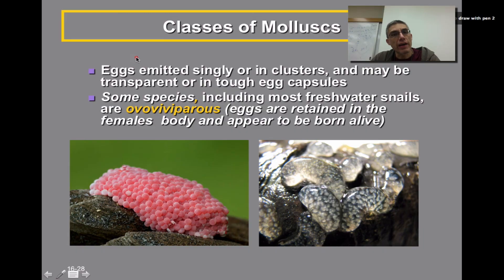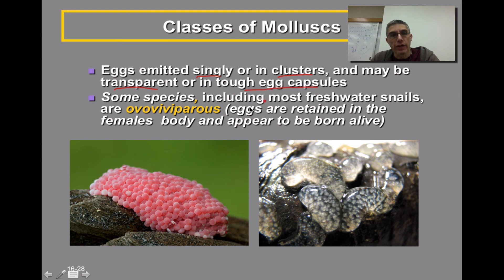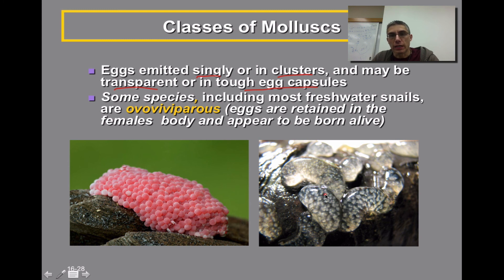Once these animals have copulated or mated, the eggs are going to be produced singly or in clusters, and they could be transparent or produced in very tough egg capsules. You can see a couple of representatives of these eggs down here — this is a cluster of eggs that might have a hard outer covering found in some snails, or it could be a soft mass. Over here you can clearly see that these eggs are more jelly-like in nature.